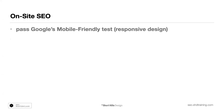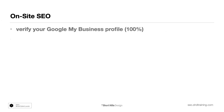Pass Google's mobile-friendly test for responsive design — just make sure that you pass it. When you do the mobile-friendly test, it might say there are page-loading issues — ignore that; every website has page-loading issues, no website gets an A there. Just make sure it says 'pass.' Verify Google My Business — we talked about that last time. For page text, you want your page text to be between 250 and 350 words.